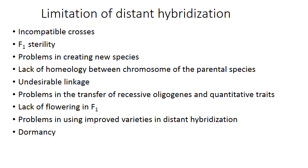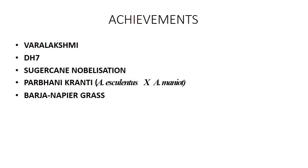Achievements through distant hybridization: Varalaxmi and DH7 in cotton; Sugarcane nobilization (crossing North Indian and South Indian cane with white and between different species); Parbhani Kranti (Abelmoschus esculentus × Abelmoschus manihot); and Bajra napier grass hybrid.